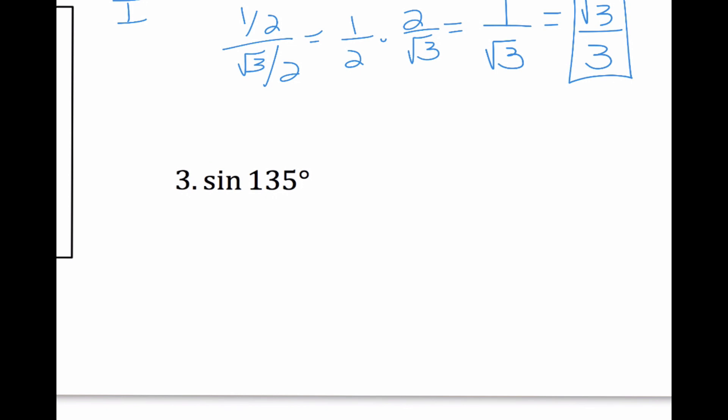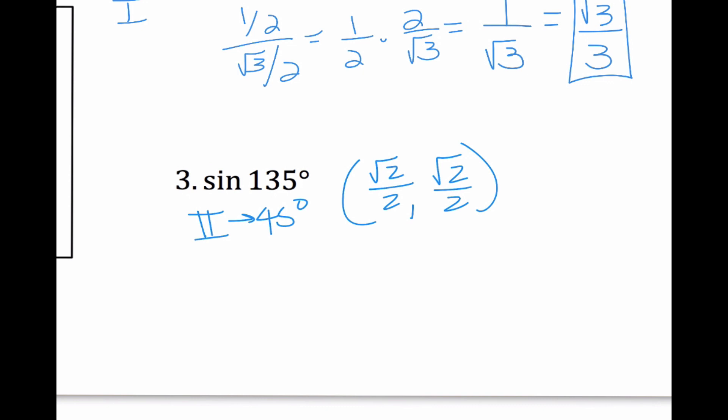And the last one I want to practice like this — sine of 135. I know 135 has a reference angle in quadrant 2 of 45 degrees. So I know my ordered pair for 45 degrees is radical 2 over 2, radical 2 over 2. In quadrant 2, all students — sine is going to be positive. Sine is y, so I'm going to take the y value, and my answer is radical 2 over 2.